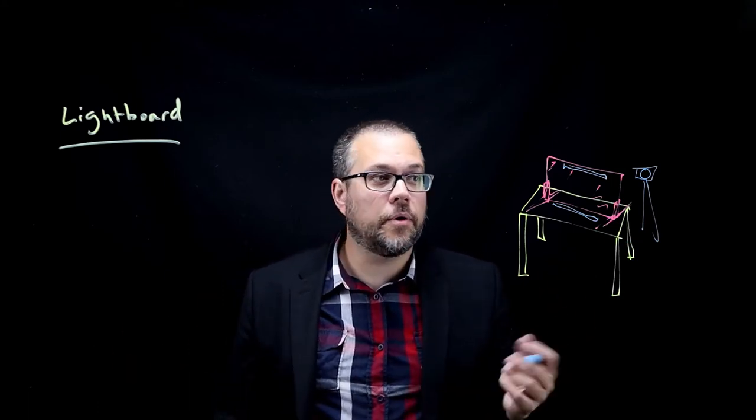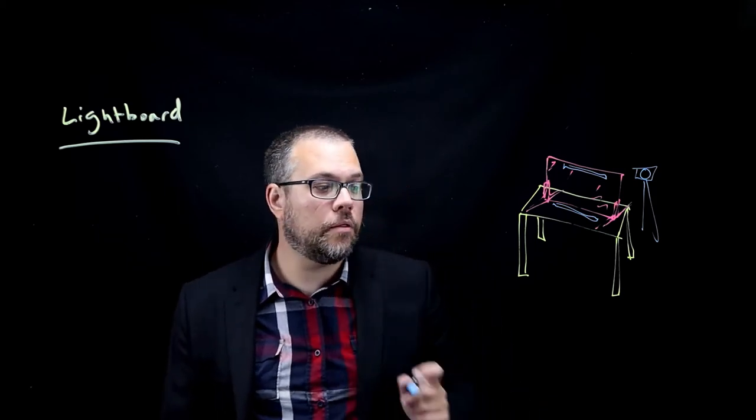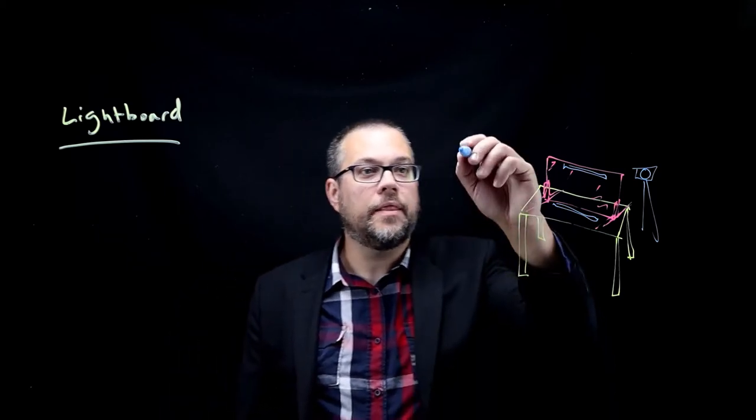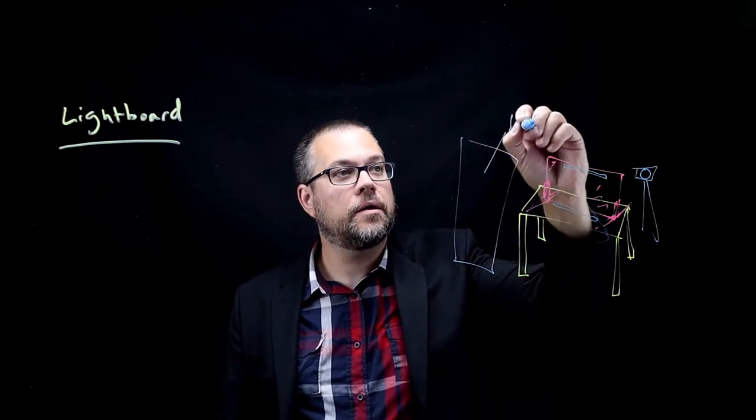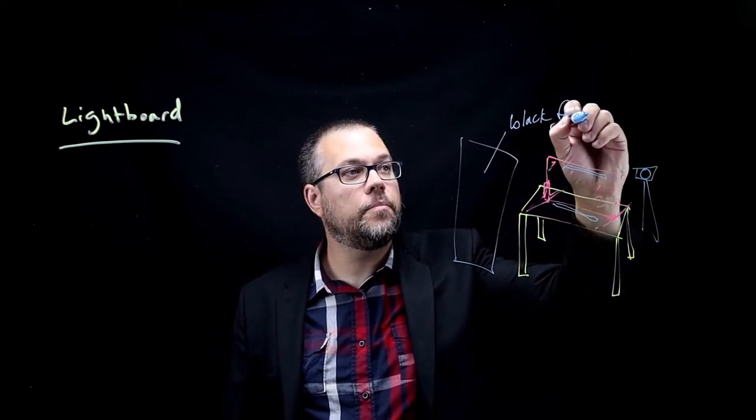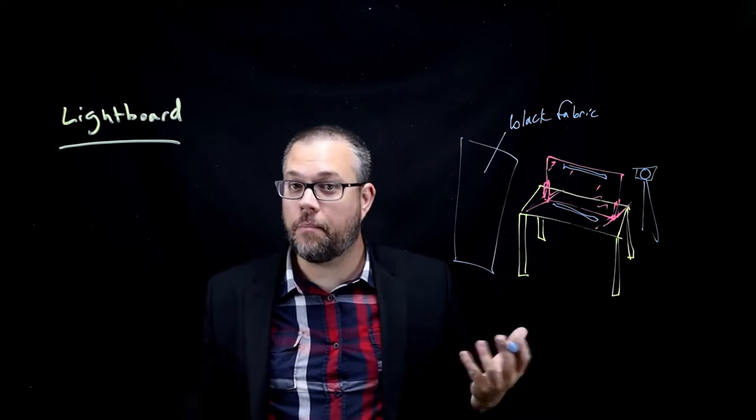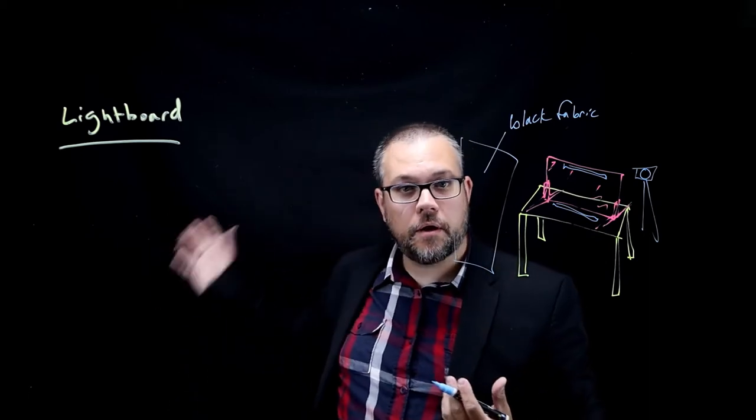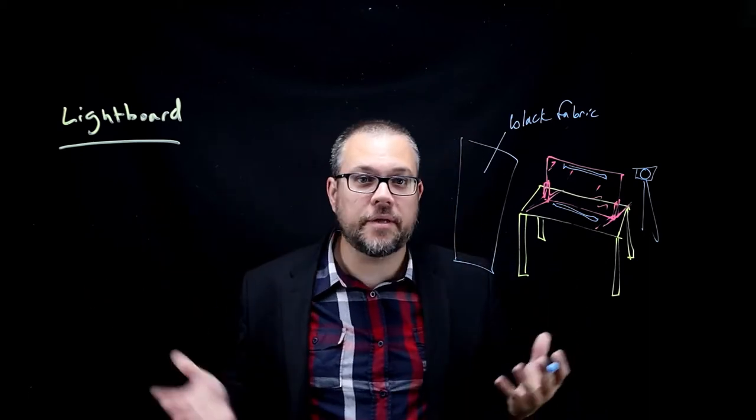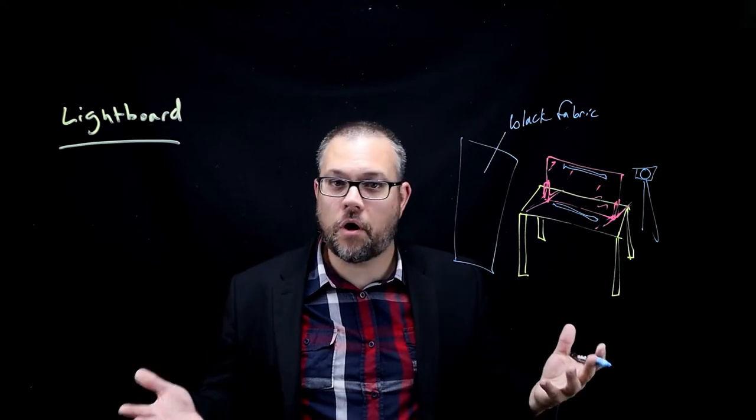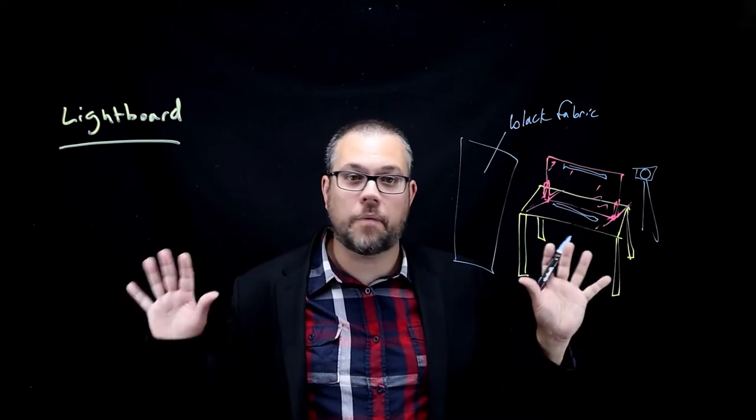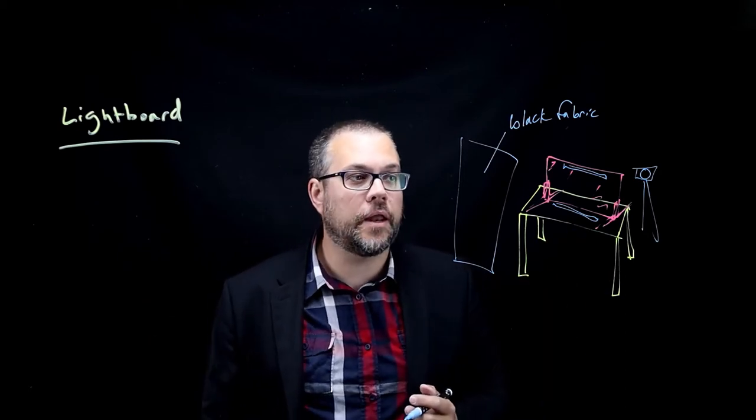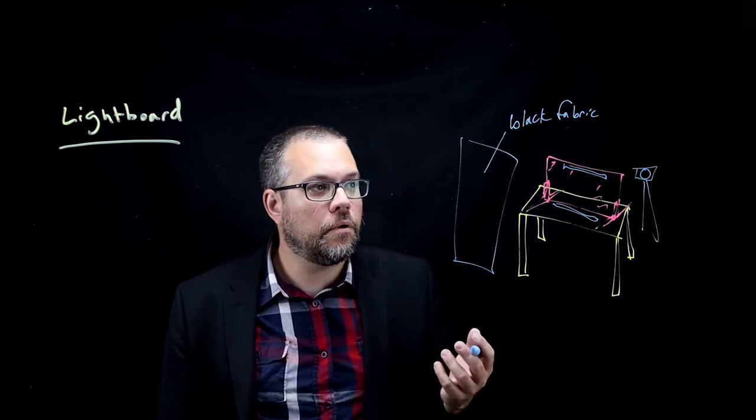That was pretty much all there was to it. No, that's not true. There's one other thing very important - back here I had a black piece of fabric, a really big one, so the background behind me was dark. You can't see the fabric itself. It's very dark back there and so there's a lot of contrast, but it's really important to have a dark background so you can see all of the writing. That's pretty much it for version one.